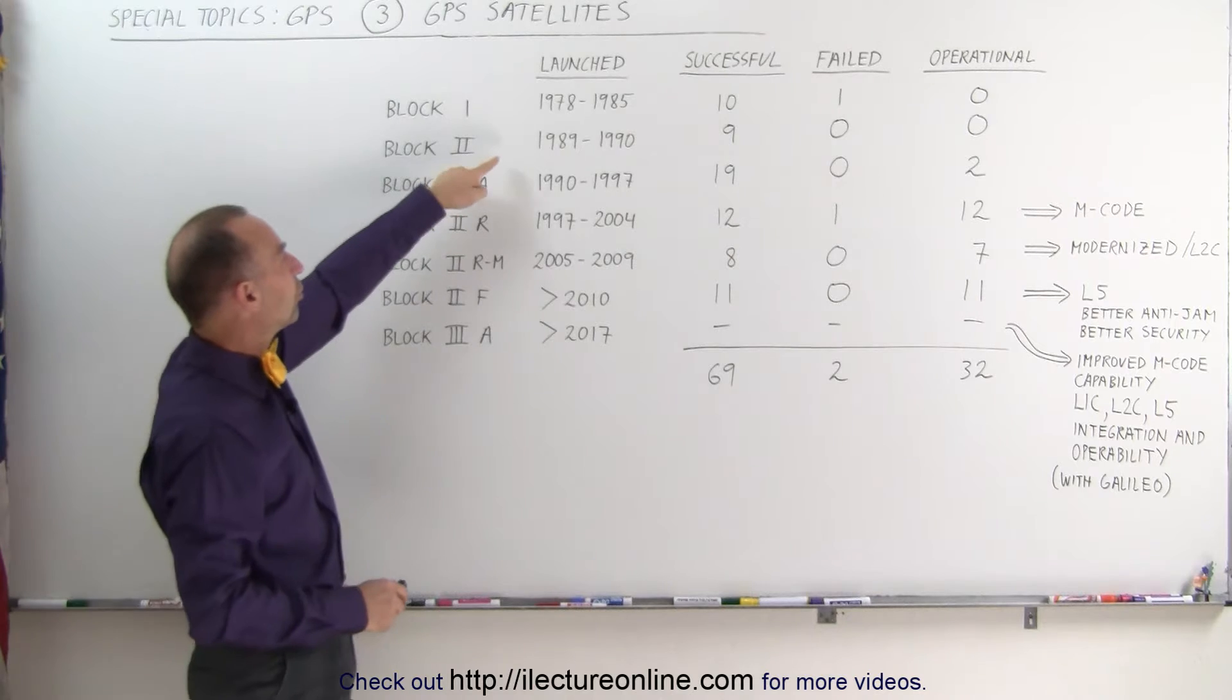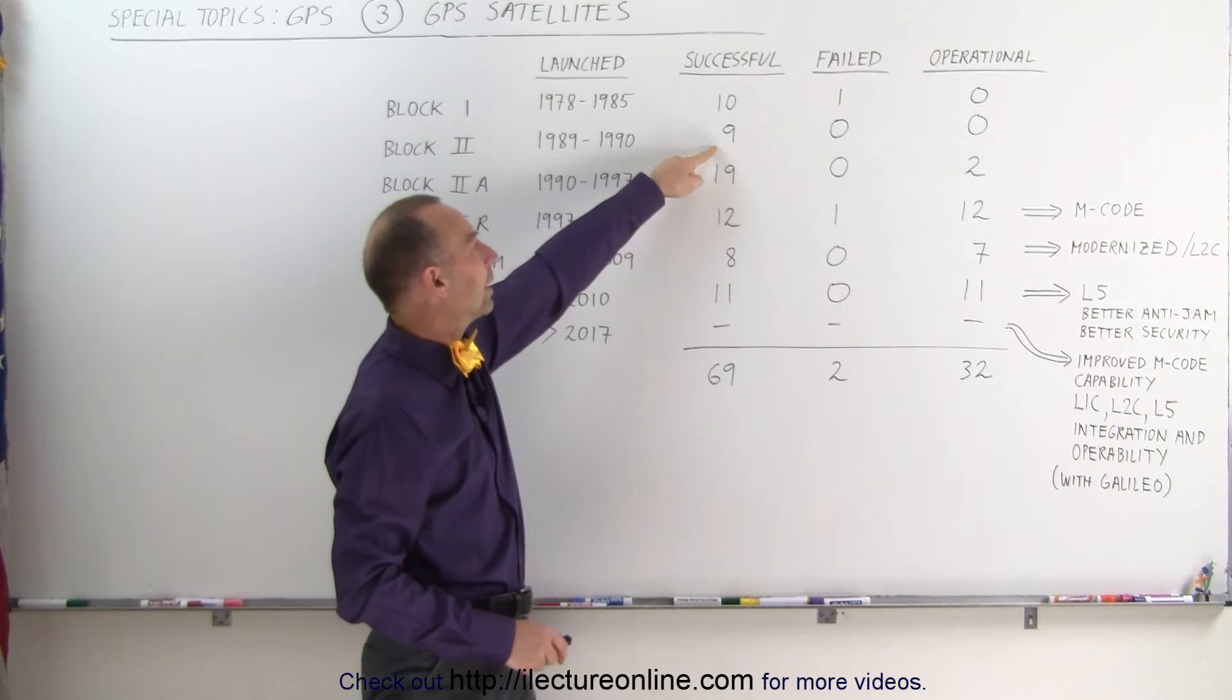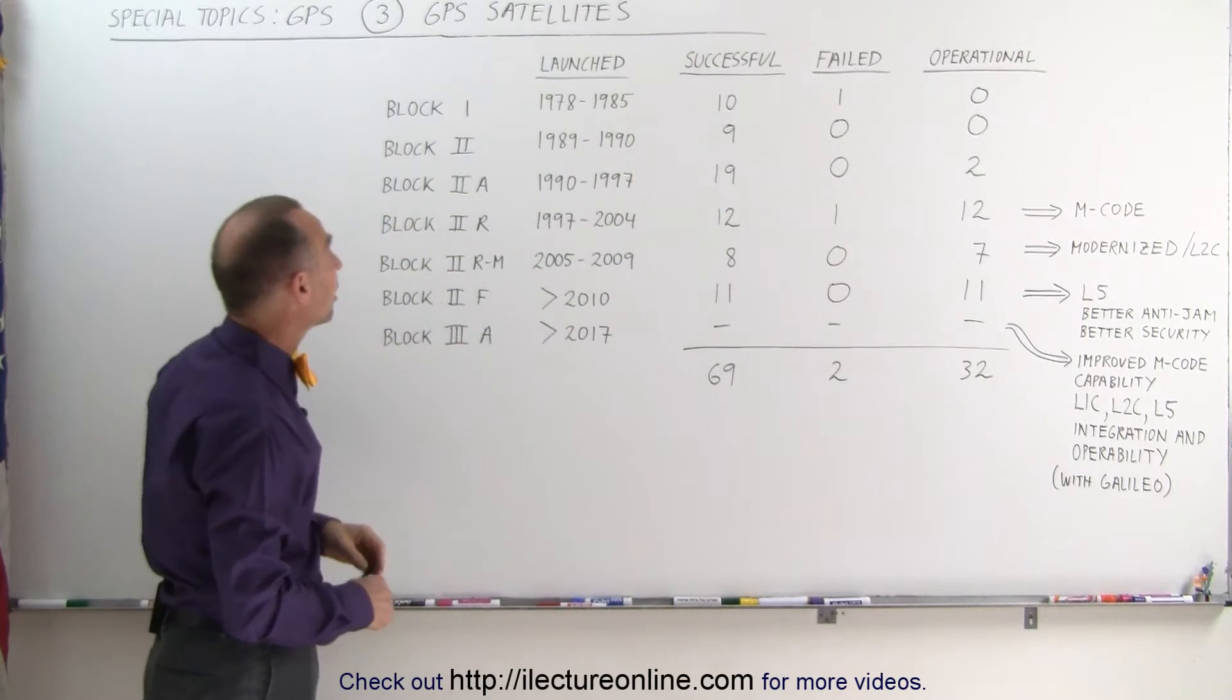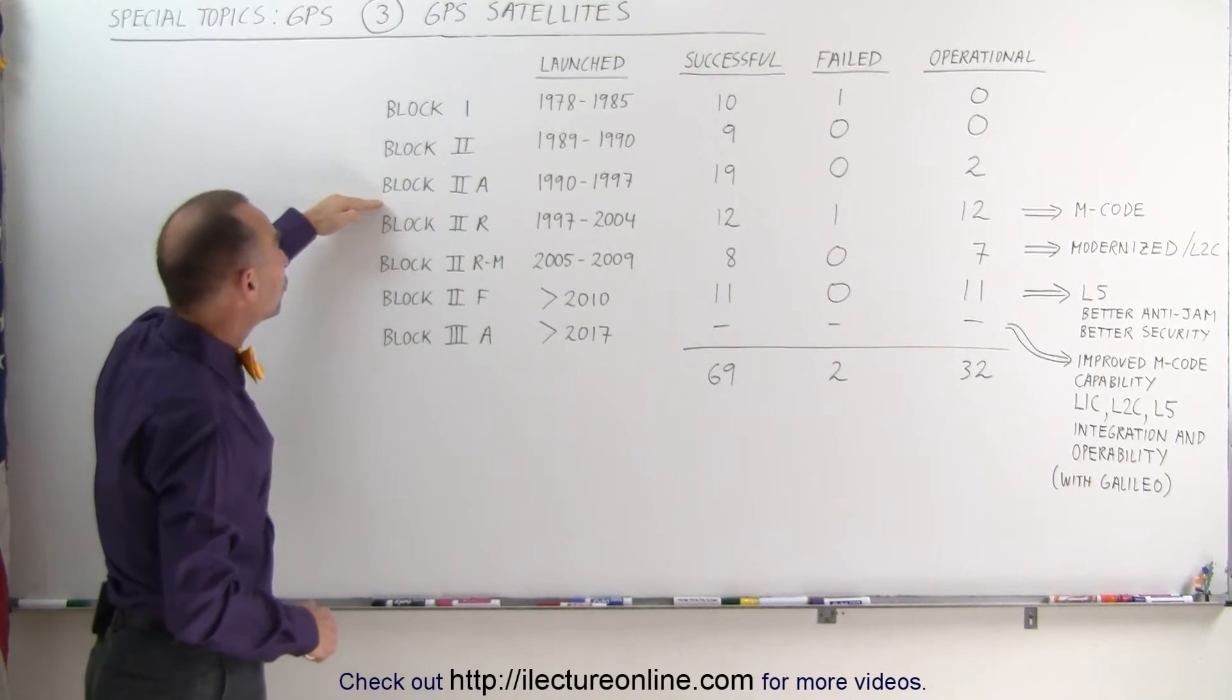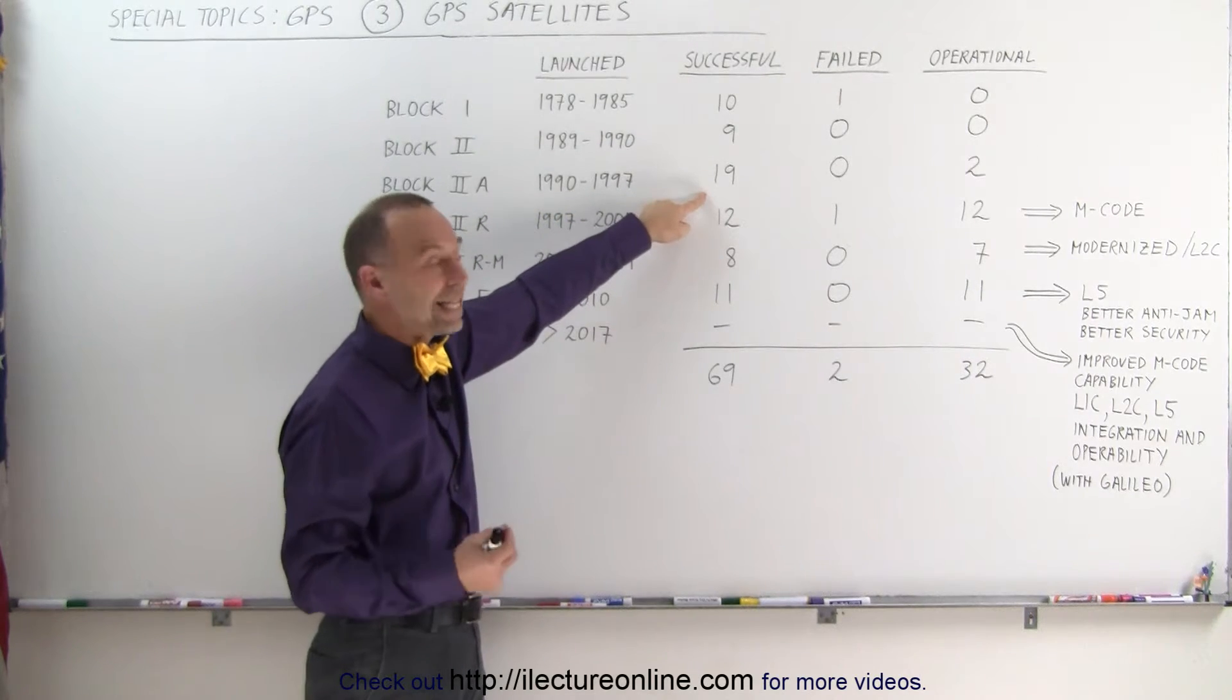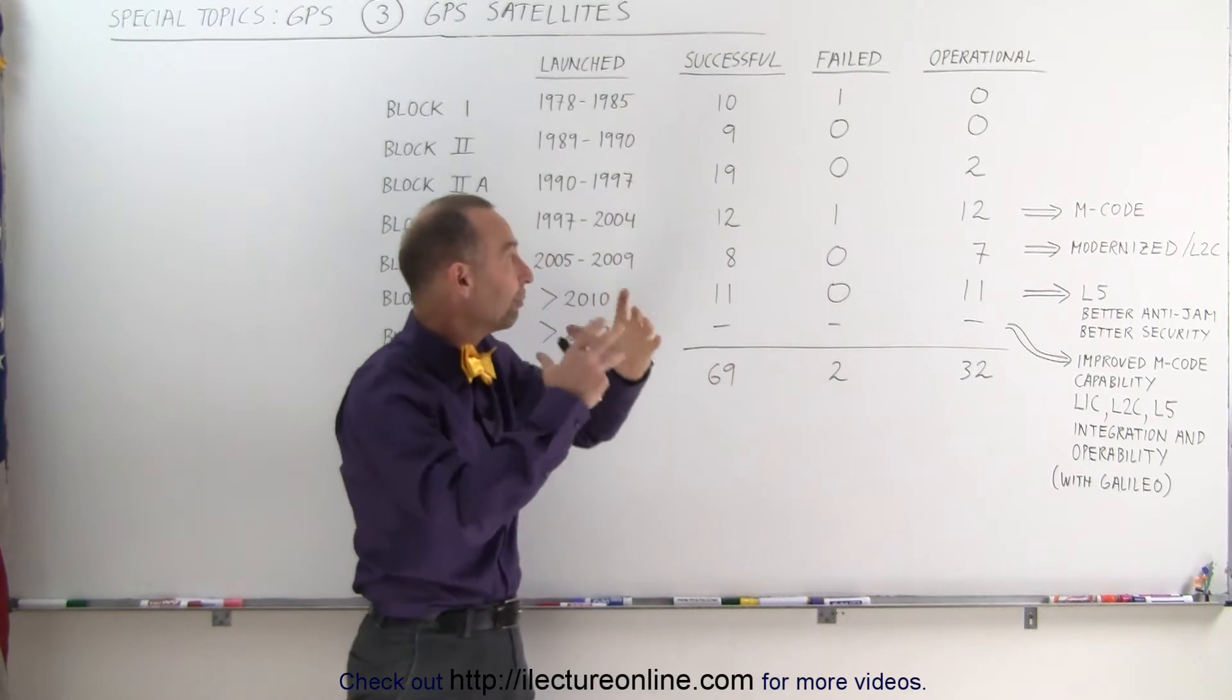Notice that the Block II satellites were launched from 1989 to 1990, adding an additional nine satellites. None of those are operational anymore. The Block IIA satellites were launched between 1990 and 1997, a total of 19 which enabled them to combine those with the Block II and Block I to form a full system.